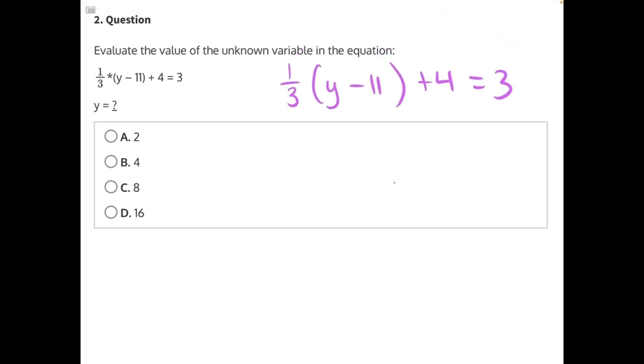Let's start by moving this positive 4. 4 is being added, so we need to do the opposite of addition to move it, which is subtraction. Now what we do to one side of the equation, we always do to the other to keep it balanced. These 4s will cancel, leaving us with 1/3 times (y minus 11) equals 3 minus 4, which gives us negative 1.